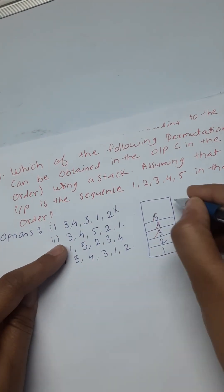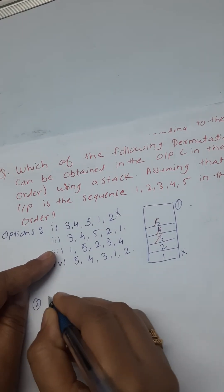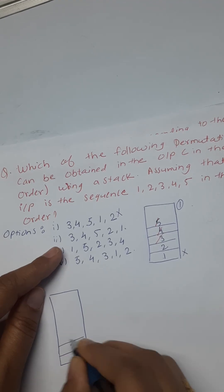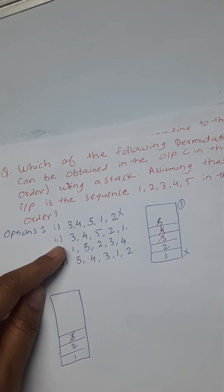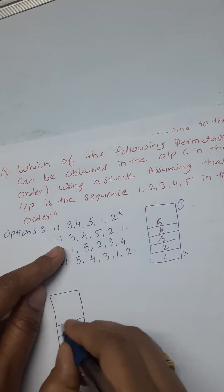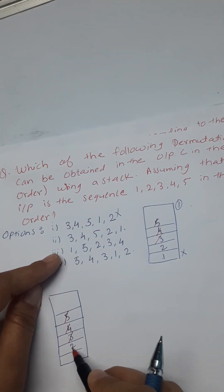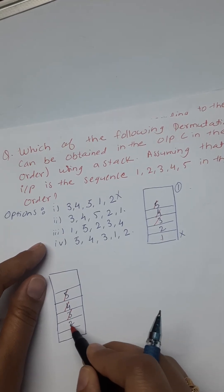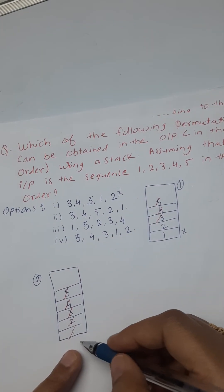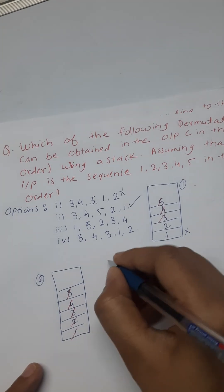The second option: push 1, 2, 3 and pop 3 — no problem. Push 4 and pop 4. Push 5 and pop 5. Then pop 2 — yes, it's the top element. Then pop 1 — yes. We can push and pop all items in this sequence without any issue, so this option is a valid stack permutation.